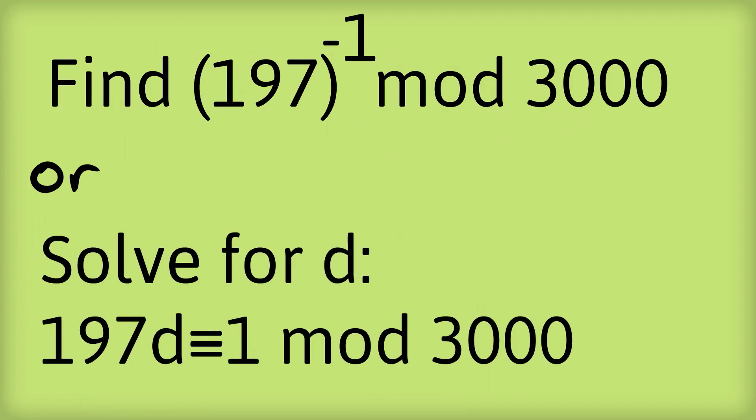Now, this is too big for trial and error, so let's do it this way. Step one, find the GCD of 3000 and of 197. Okay, to do that we're going to use Euclid's algorithm.